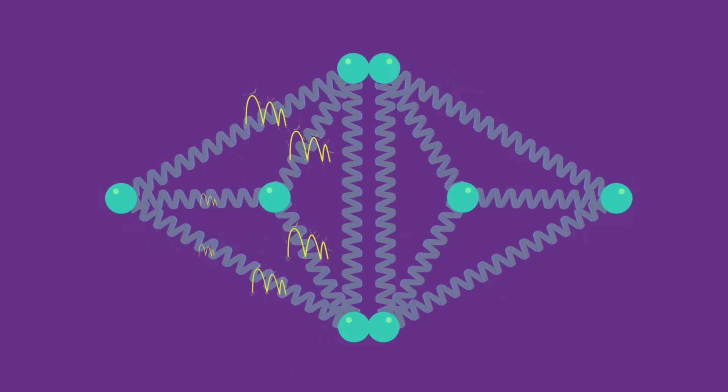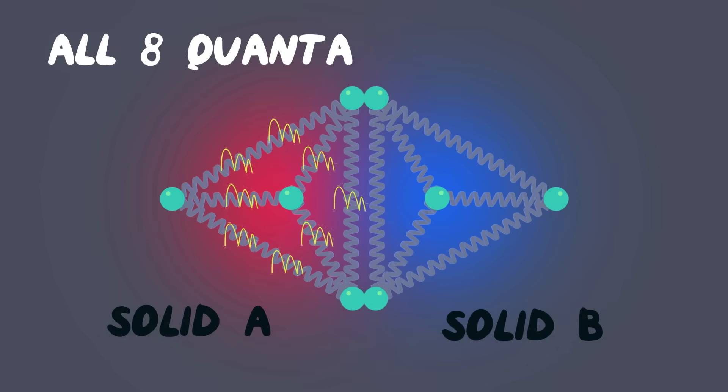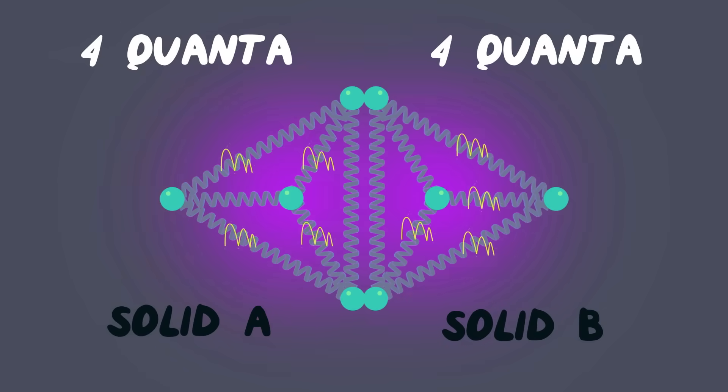Of course, there are other ways our eight quanta of energy can be arranged. For example, all of the energy could be in solid A, and none in B, or half in A, and half in B.